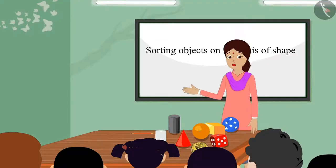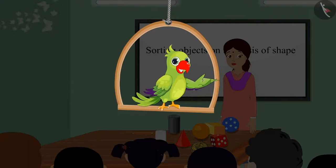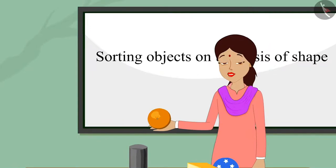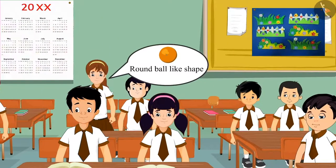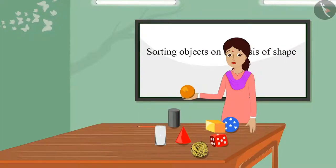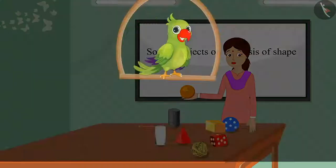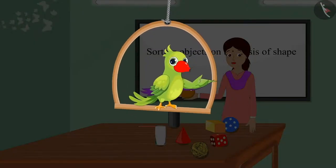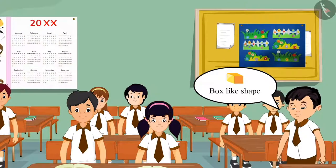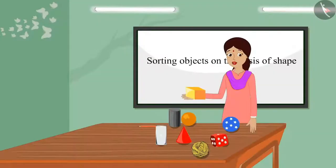The teacher shows objects and asks children to identify them. 'Can you identify which shape this object resembles?' A child answers: 'This is a round ball like shape.' Well done, Arti — you are right, this has a round ball like shape. The teacher shows another item: 'What does this object look like?' Chotu answers: 'This has a box like shape.' Well done, Chotu — this has a box like shape.